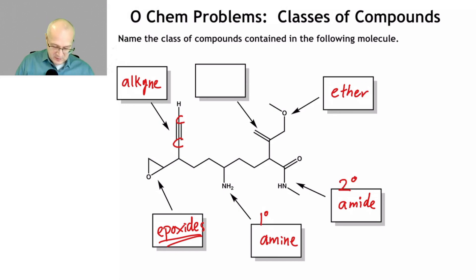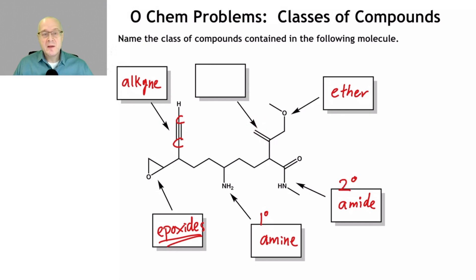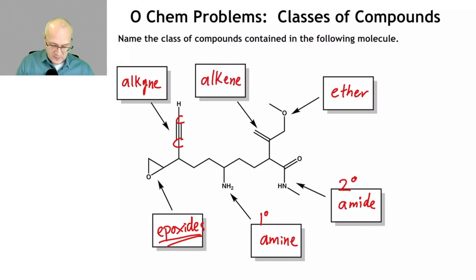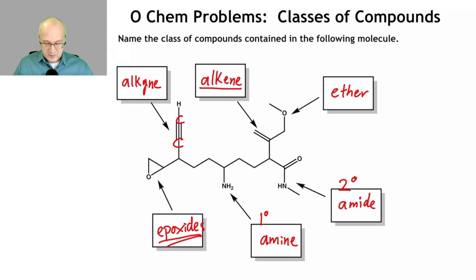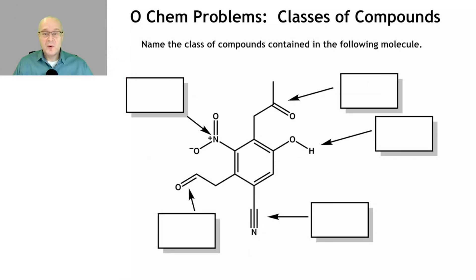Next, this one is pointing here at this carbon-to-carbon double bond. That's an alkene. Alkanes, alkenes, alkynes, aromatics. So that's this one, and this is how you solve this problem. Let's do another class of compounds question because it's always good to practice these things. Practice makes perfect in organic chemistry just like everything else.